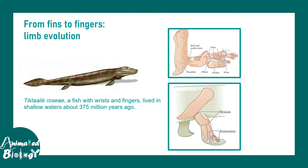Limb bud evolution happened long ago — fish didn't have limb buds. The missing link between fish and amphibians is Tiktaalik, a fish with a wrist and fingers. It was thought that as these fish began to move out of the aquatic environment to explore terrestrial environments, they developed finger- and digit-like structures quite similar to tetrapod limbs. The decision to have defined limbs was set 375 million years ago.